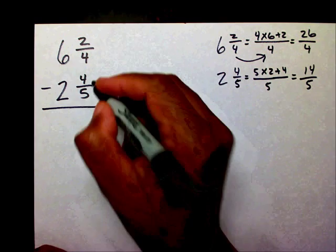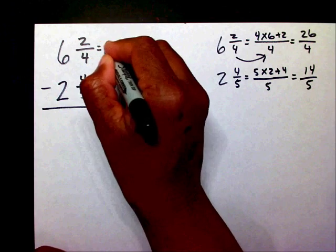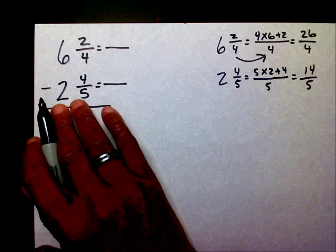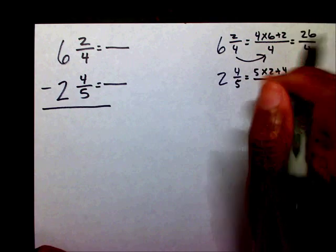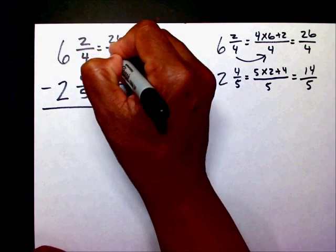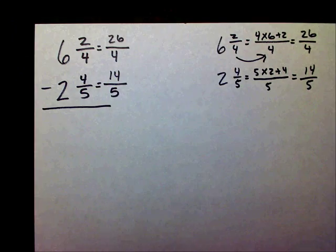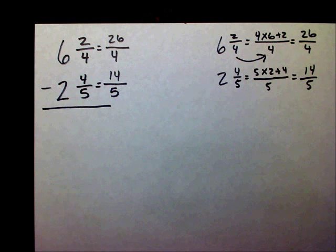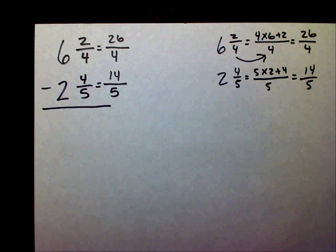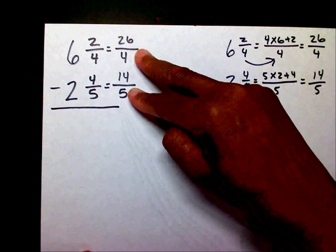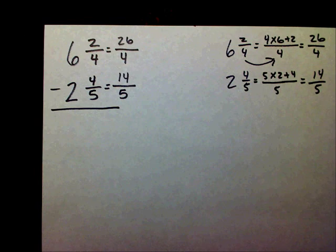Now we've changed our mixed numbers into improper fractions: 26 fourths and 14 fifths. But I still can't subtract because I need to get a common denominator. We know from previous videos that when you need a common denominator, you list your multiples.